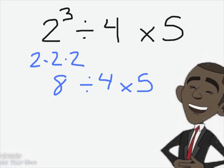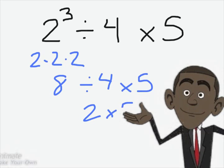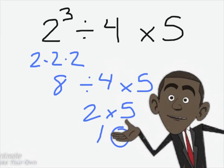Multiplying and dividing go together, do the one that is on the left. So, 8 divided by 4 is 2. Then I finish by multiplying 2 times 5 which is 10.